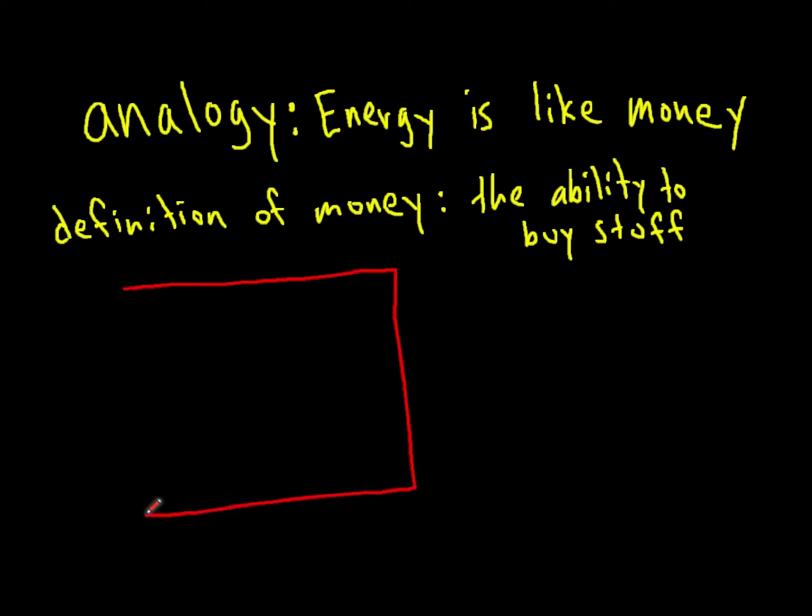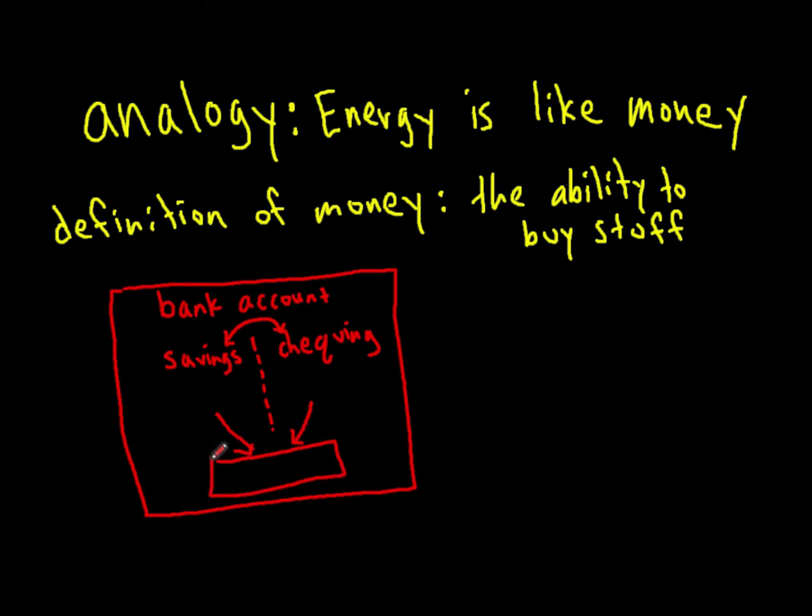Now, when you think about money, you think about where you keep your money. In this case, we're going to consider your bank account. Your bank account is divided into your savings, the money you're putting away for later, and your checking, which is the money that you have available to buy stuff with. You can change money back and forth between your savings and your checking, and your savings and your checking combine to create your total amount of money.